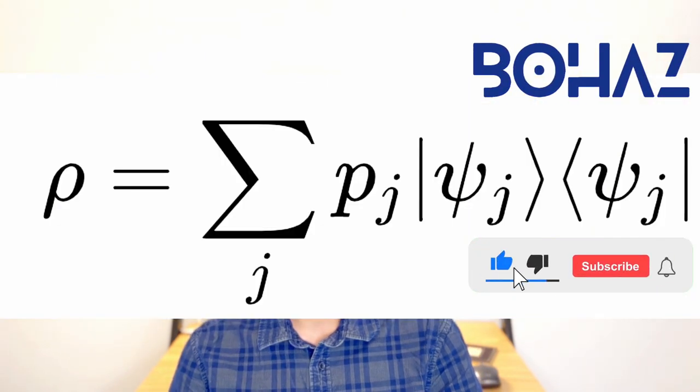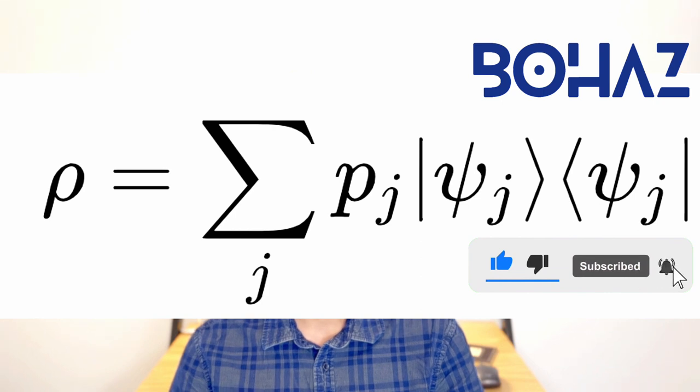However, there is a subtle flaw in this entire argument. Knowing the quantum state of an Avogadro's number of particles is impossible, as no one can tabulate the number facing up in a million dice and then take an average. To resolve this issue, we will introduce something called the density operator in a future video. So stay tuned! Thanks for watching!